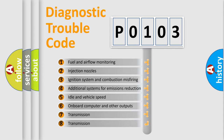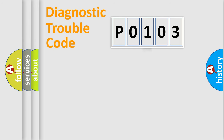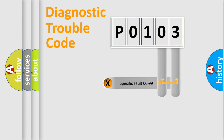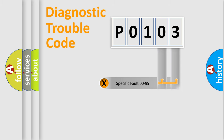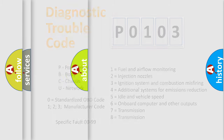The distribution shown is valid only for the standardized DTC code. Only the last two characters define the specific fault of the group. Let's not forget that such a division is valid only if the second character code is expressed by the number zero.